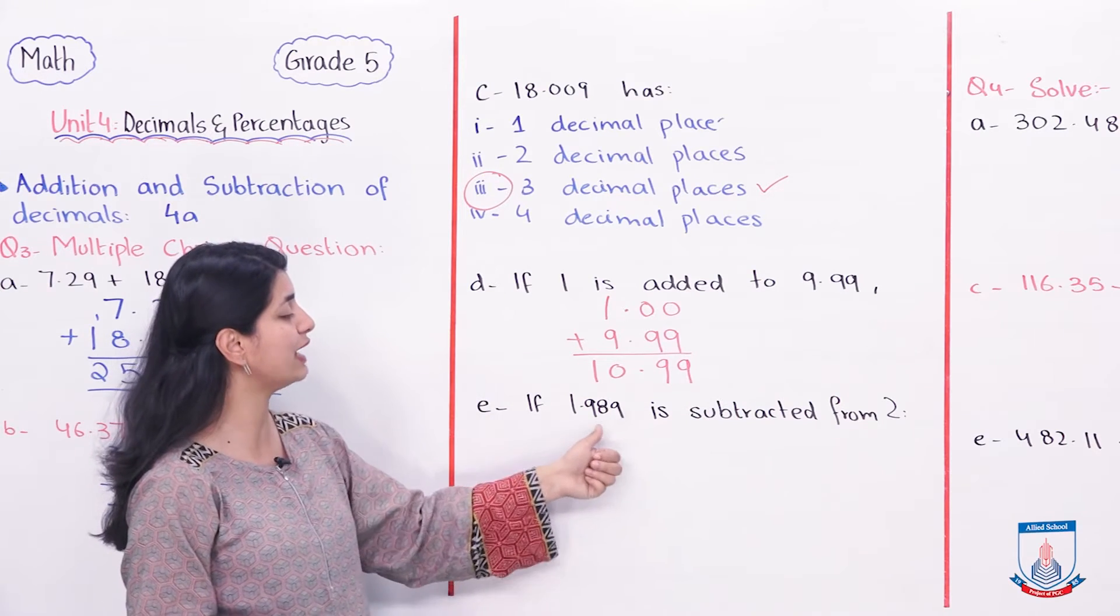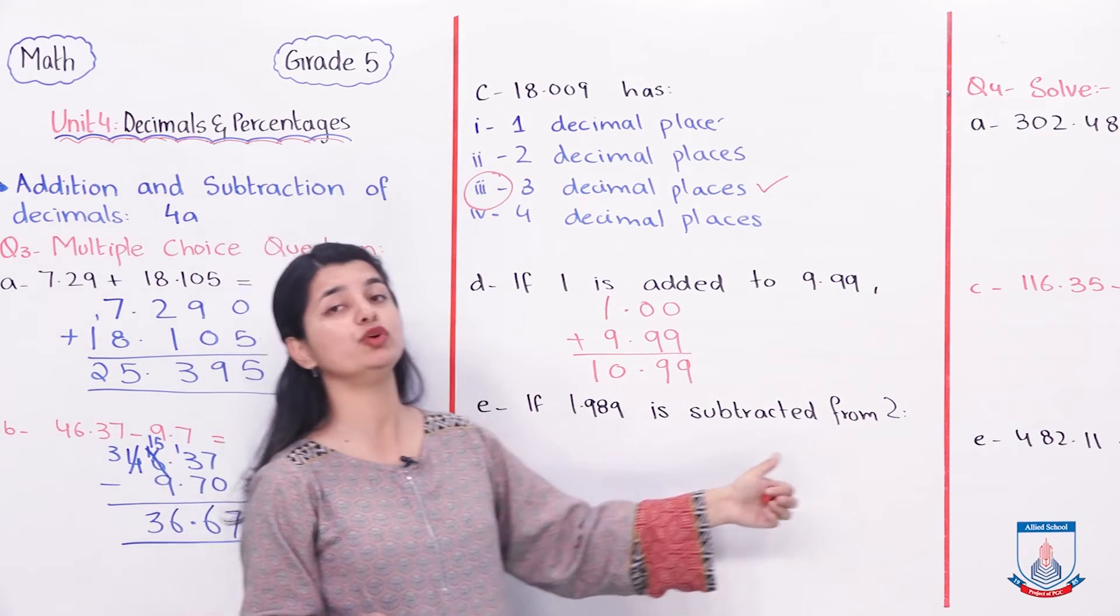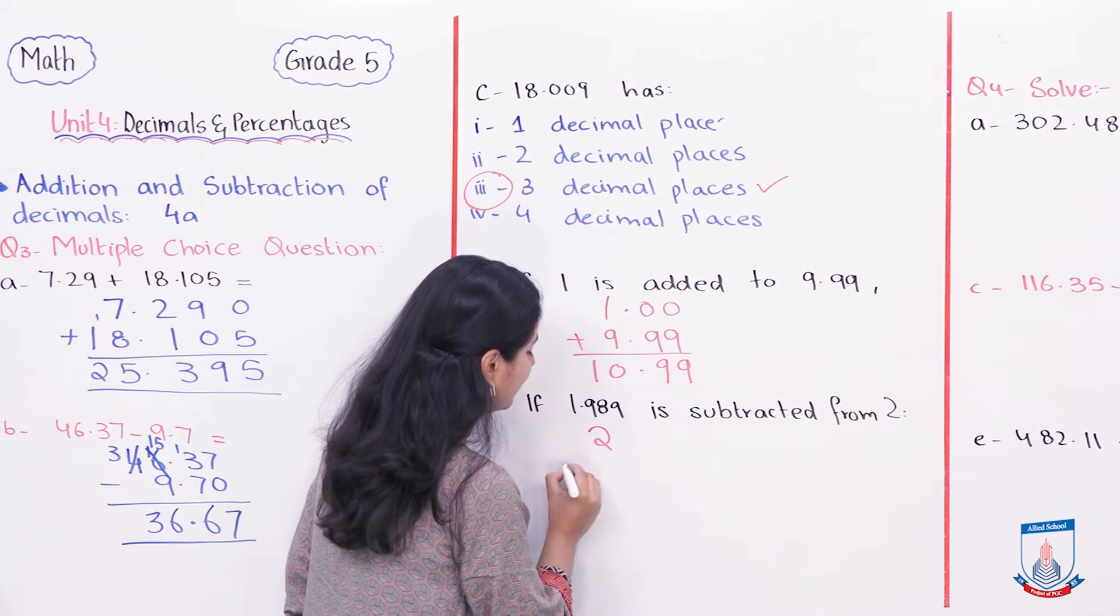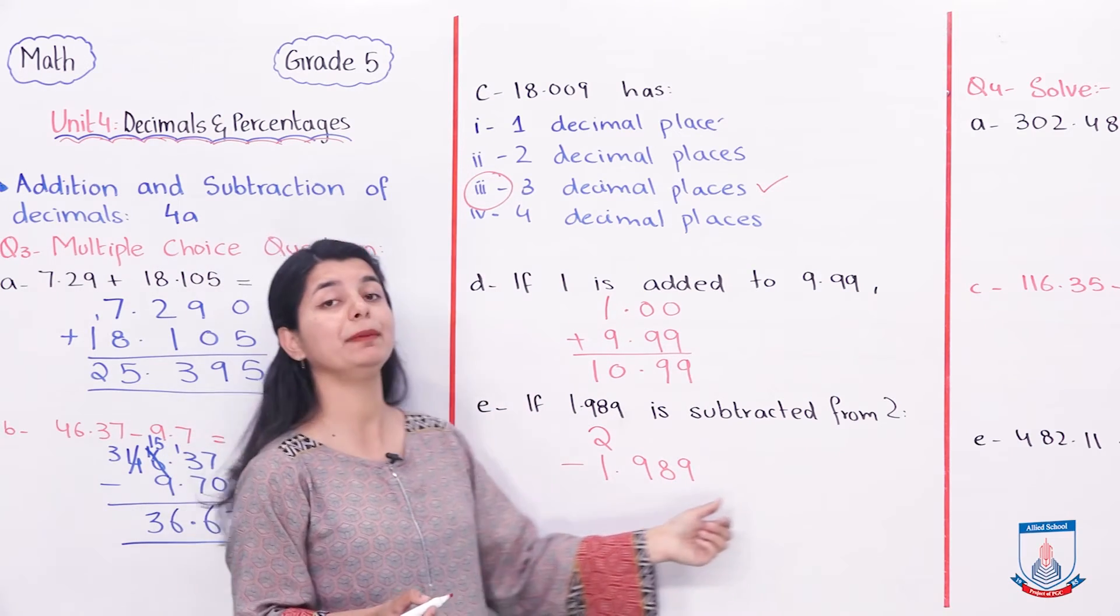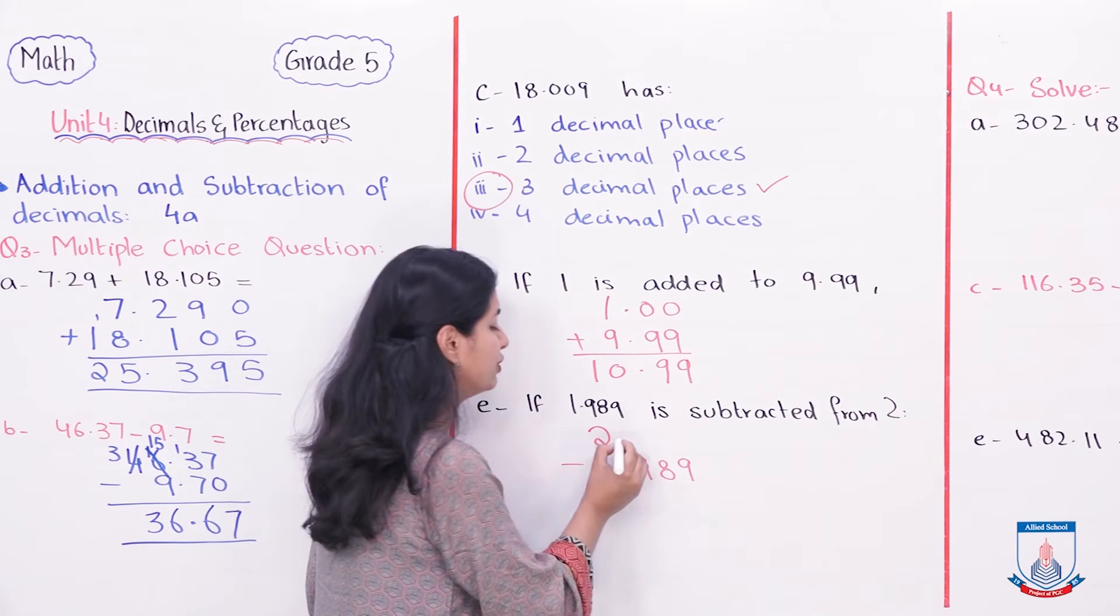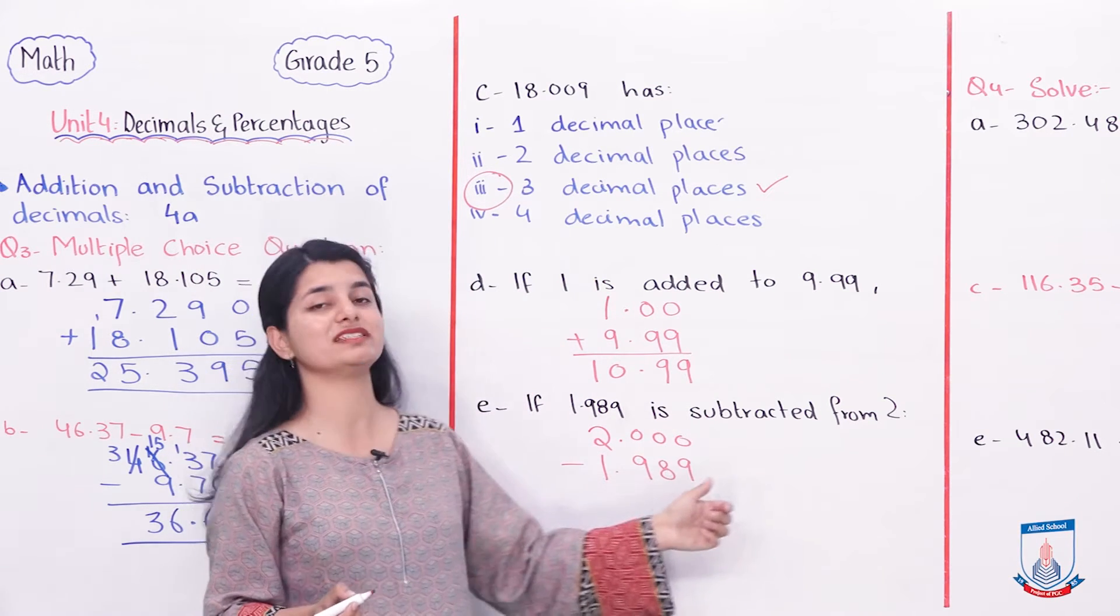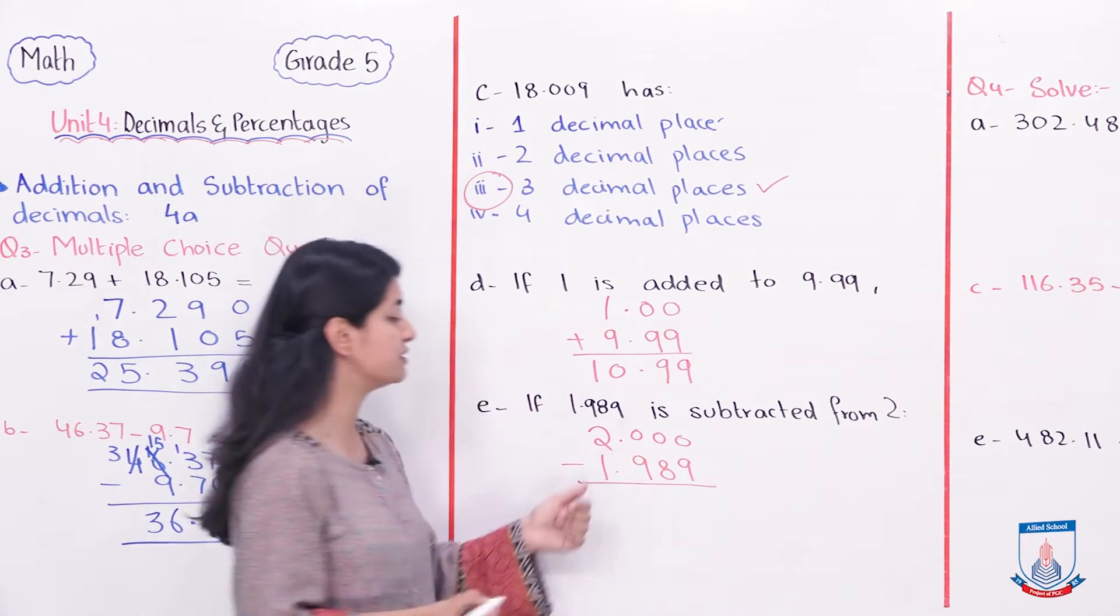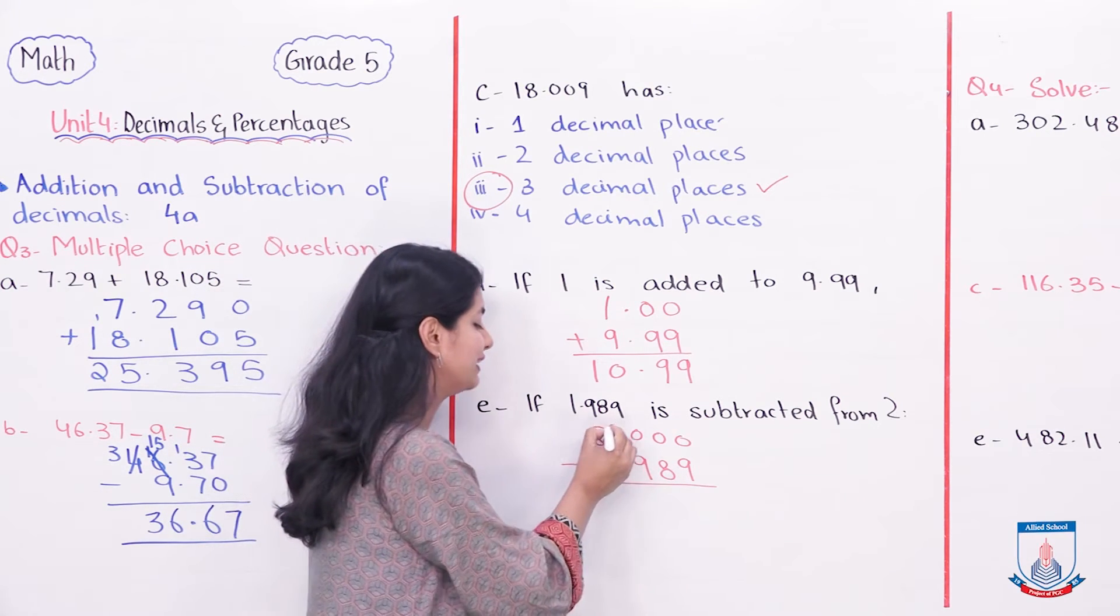Part E: If 1.989 is subtracted from 2, then write 2 minus 1.989. Now what is the problem? The problem is that with 2 this is unlike decimal. We will add a decimal to make like decimal and 3 zeros. Now I can subtract 1.989. Now the next step is that you can't minus from 0, you can't minus from 0, 8 and 9. I will carry, this is 1.